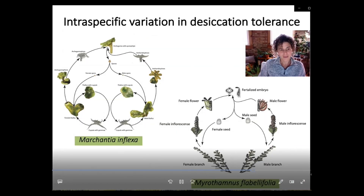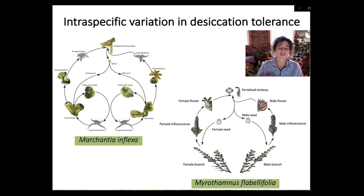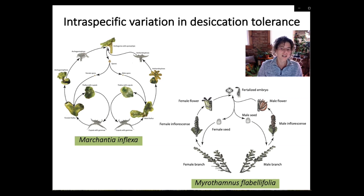Moving on to the last section, I'd like to talk about using a different approach to identify tolerance-enhancing genes and alleles: looking at natural variation within a specific species. This has the advantage of minimizing the background noise that was confounding our cross-species comparisons. My PhD work was devoted to looking at natural variation within the tropical liverwort Marchantia inflexa, and we did identify a fair degree of differences in desiccation tolerance among individuals and populations, linked to complex patterns of gene expression.